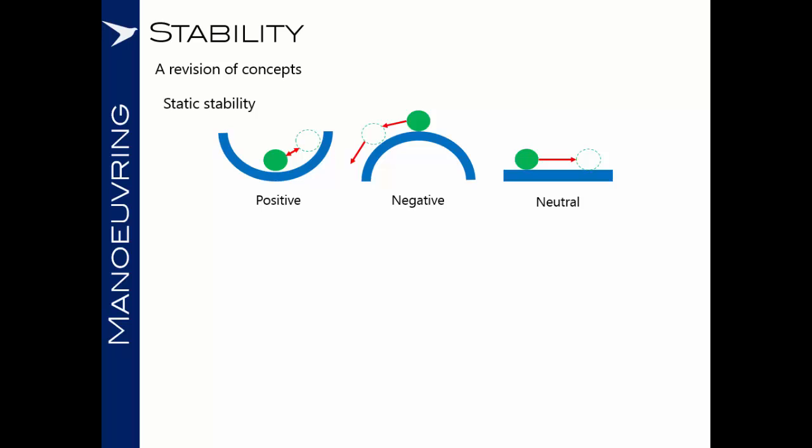In the middle diagram, if the ball is disturbed from the top of the cup, it will become increasingly divergent, and so we say it has negative static stability. The third diagram shows a flat surface with a ball that's simply translated from point A to point B, with no tendency to either diverge or return to the original position — this is neutral static stability.